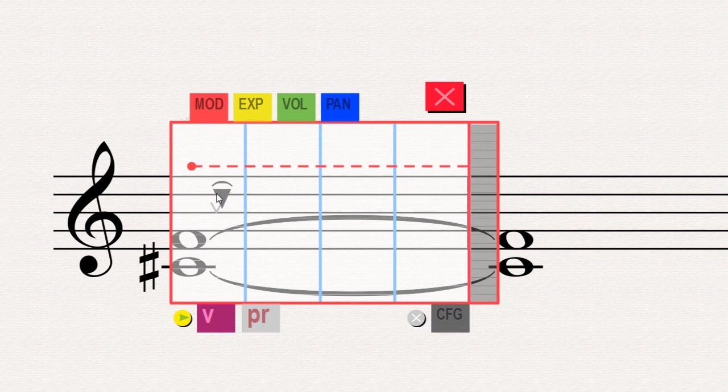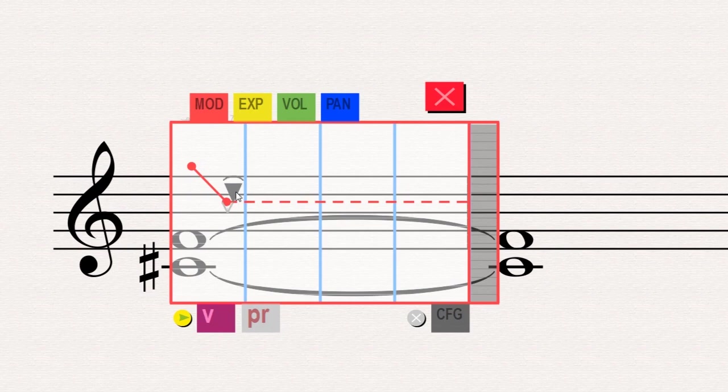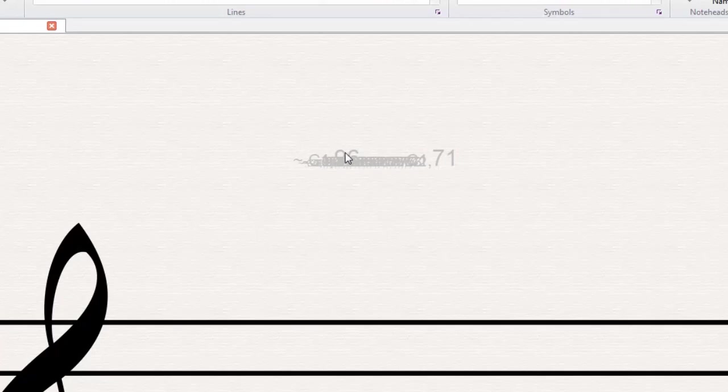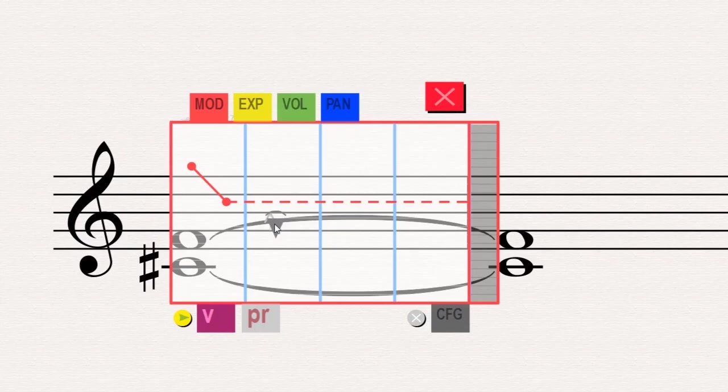So, we drag the pencil to any place inside the lane, and then we strike the plugin key. By doing so, a node will appear. This dot here represents the value of the modulation wheel at this point in the score. The dashed line means that the value is kept for the rest of the timeline. Now, if we move the pencil and strike the key, we add a new node. What is happening here, is that the plugin is adding the necessary MIDI commands as we build the curve.